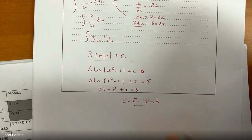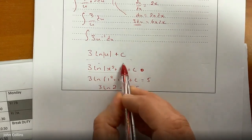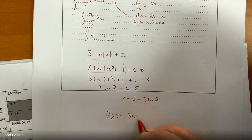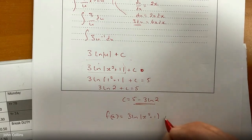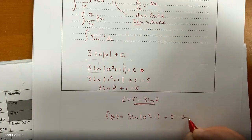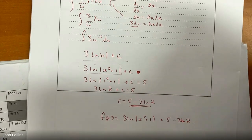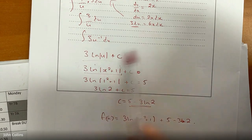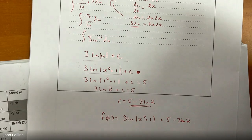c is 5 − 3 ln 2, so the full function is 3 ln(x² + 1) + 5 − 3 ln 2. That was a difficult 5-mark question. Getting this far is 2 or 3 marks — just even trying integration and getting some of it right.